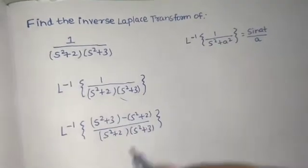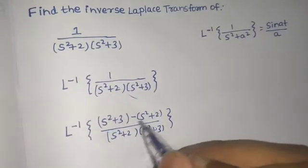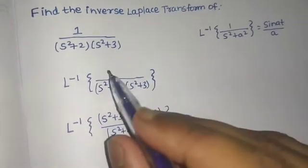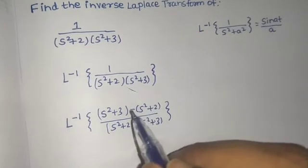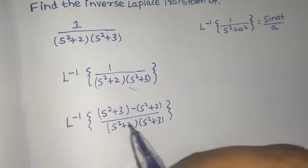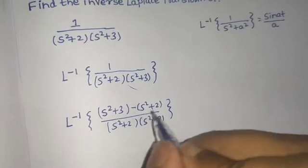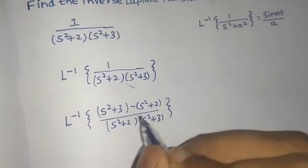Now if you see carefully, s² minus s² cancels and 3 minus 2 is 1. So no change in numerator, but now the numerator is in the form of the denominator terms.